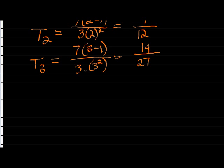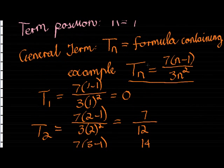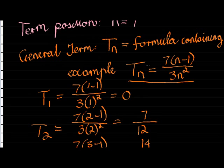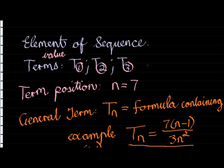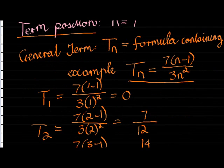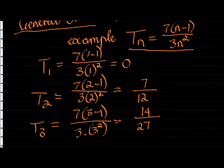So, that is why this is called the general term and I can then also use it to find the 100th term if I want to do any term. So, each sequence has terms, term positions, can be described by a general term and finally the sequences that we're going to look at has got some sort of identification.